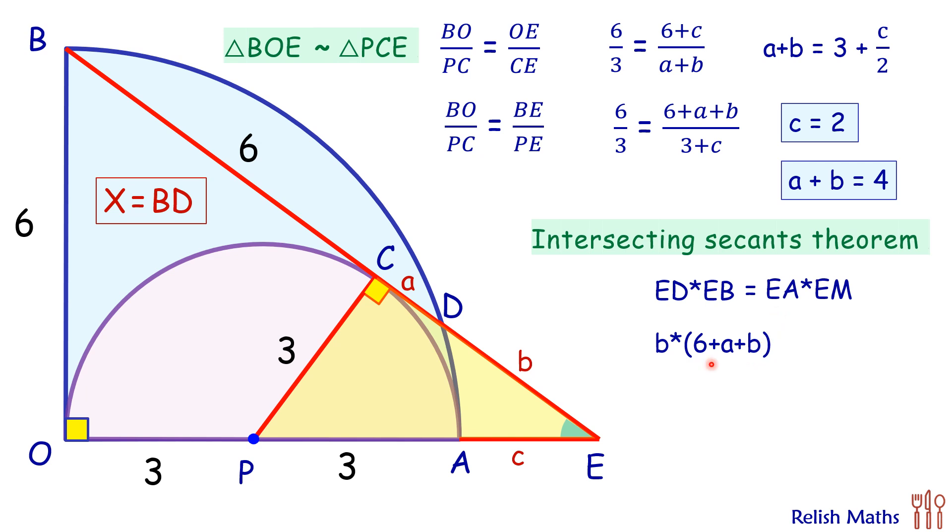Now here let's put the value. ED is B centimeters and EB will be 6 plus A plus B. This will be equal to EA. EA is C centimeters which is nothing but 2. We have already calculated that as 2, so EA will be 2. EM will be 2 plus the diameter of the blue circle which is 12, so EM will be 2 plus 12 or 14 centimeters. So this will be equal to 2 times 14.